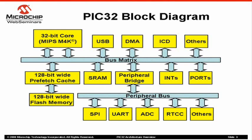Modules such as the CPU core, USB, and DMA connect to the SRAM, SPI, UART, etc., via the bus matrix and peripheral bus. The bus matrix runs at the same speed as the CPU, while the peripheral bus can be programmed to run at a different clock from the CPU. The exact bus clock is determined by the peripheral bridge setting. Notice that the PIC32 uses a 128-bit wide flash memory — such a wide memory path is specifically designed to increase instruction throughput and improve overall CPU performance.